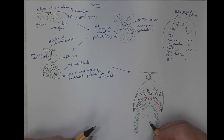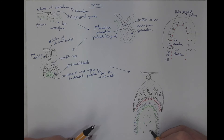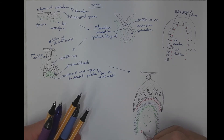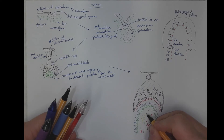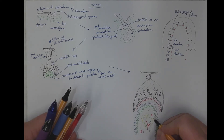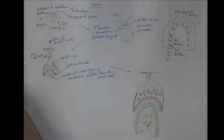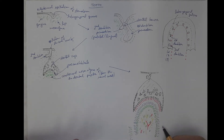The dental pulp contains star-shaped and spindle-shaped fibroblasts — very loose connective tissue with many blood vessels and nerve fibers branching throughout. The surrounding mesenchyma forms a so-called dental follicle, which will later differentiate into cementum, periodontal ligaments, and the alveolar periosteum.